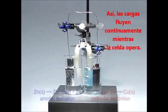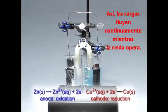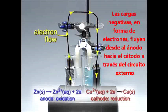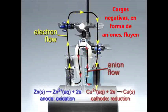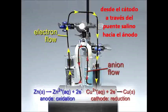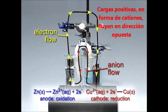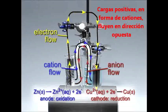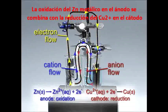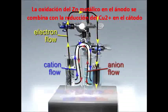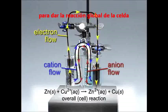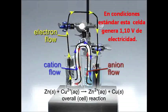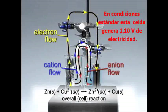Thus, charge flows continually as the cell operates. Negative charge in the form of electrons flows from the anode through the external circuit to the cathode. As negative charge in the form of anions flows from the cathode compartment through the salt bridge to the anode compartment, positive charge in the form of cations flows in the opposite direction. The oxidation of zinc metal at the anode combines with the reduction of copper 2+ ion at the cathode to give the overall cell reaction. Under standard conditions, this cell generates 1.10 volts of electricity.